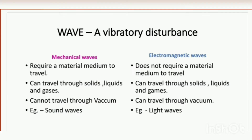Next, we want to talk about what kind of wave sound is. Before that, we need to understand what a wave is. A wave is a vibratory disturbance. Any vibratory disturbance is called a wave, which can be classified into many types.